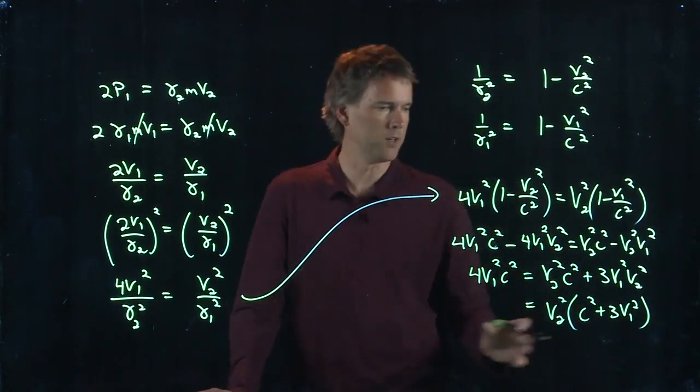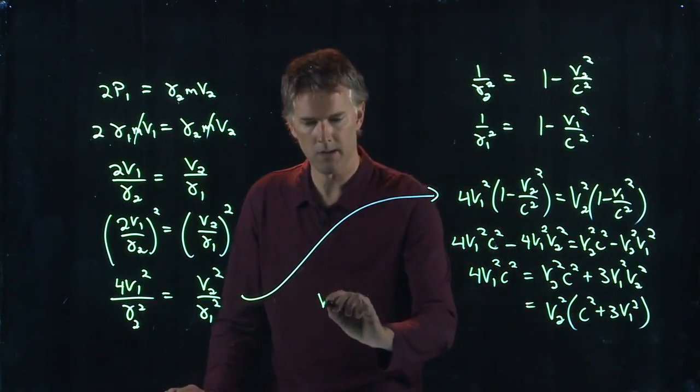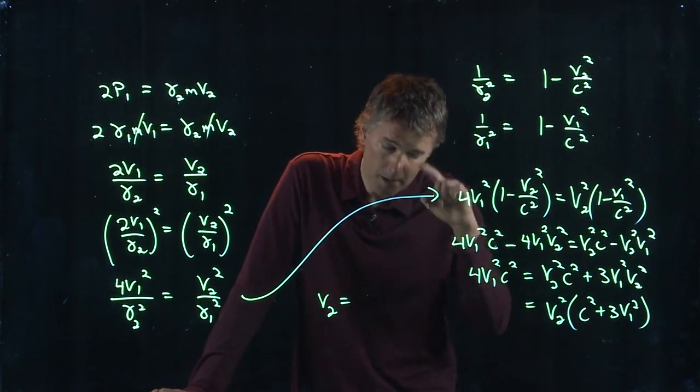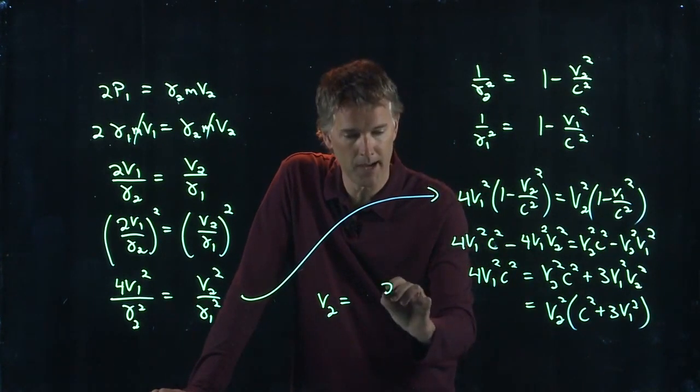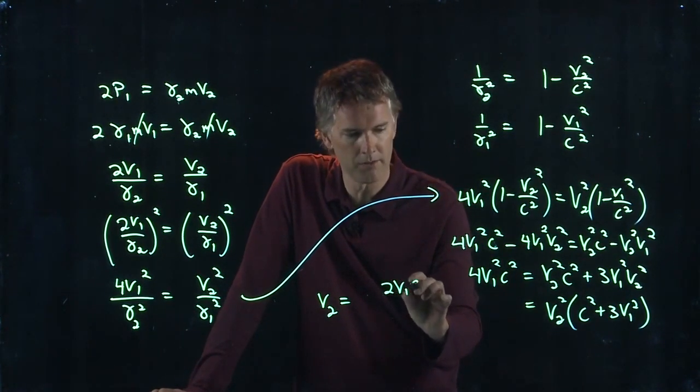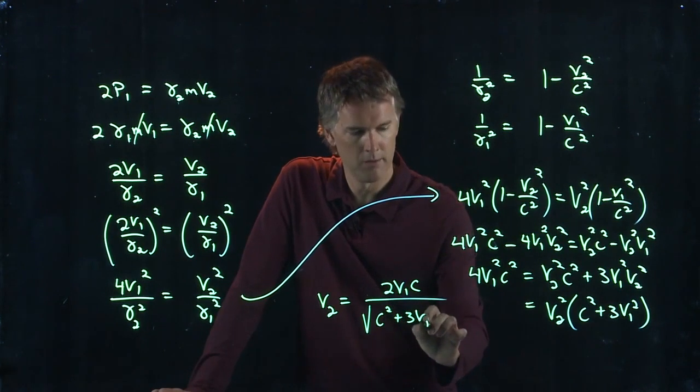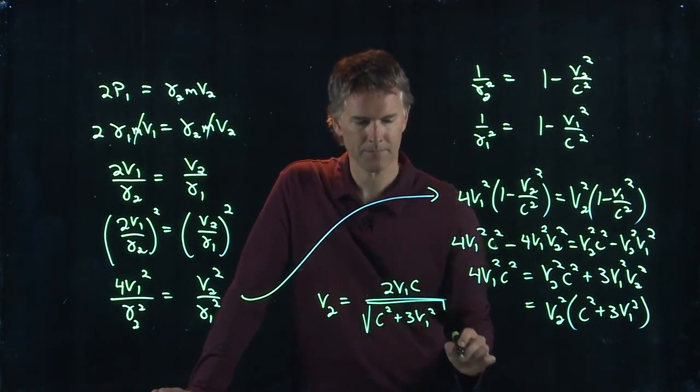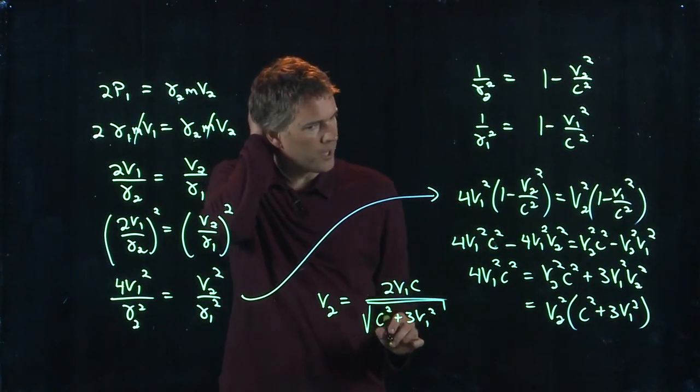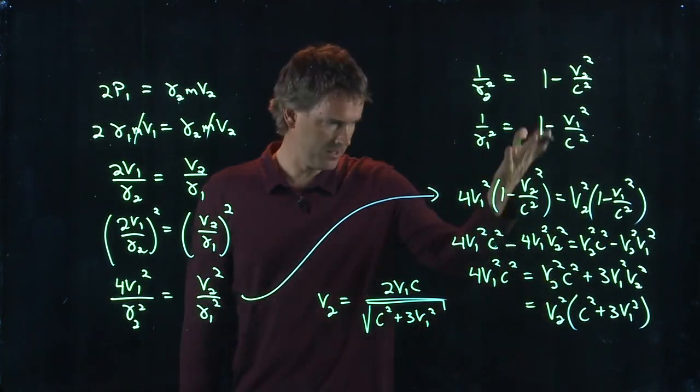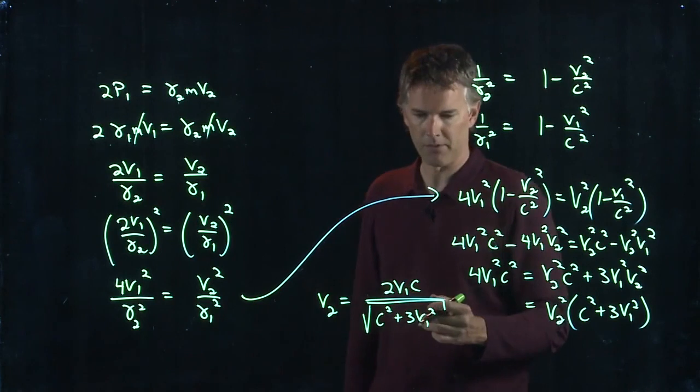And then finally we can divide by that quantity and you end up with the following. v2 is equal to, and I'm going to have to take the square root so I can do that right now. 2 v1 c all over the square root of c squared plus 3 v1 squared. I went through that slightly quickly, but you can replay the video later on and double check your algebra and make sure you get the same thing.